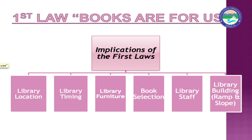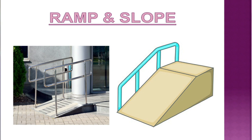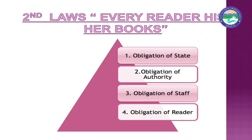Regarding the library building, our library should be designed to provide services to every kind of user. There should be a ramp or slope so that disabled persons can also access the library. This is the first law of library science.